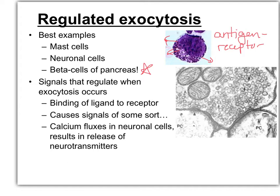The antigen could be a piece of pollen, it could be cat dander, it could be anything that causes that allergic reaction. In neuronal cells, it's the neurotransmitters that pile up at the nerve terminus, and in beta cells of the pancreas it's the hormone insulin that's produced in large quantities and secreted through vesicles.